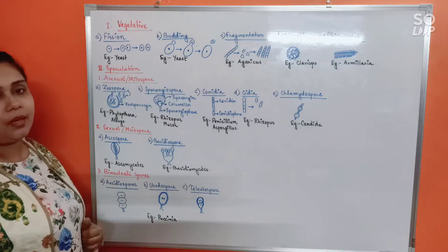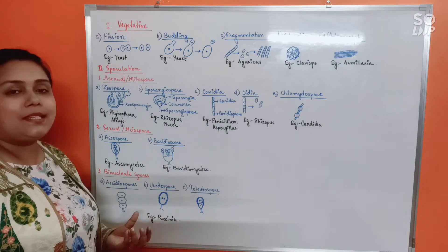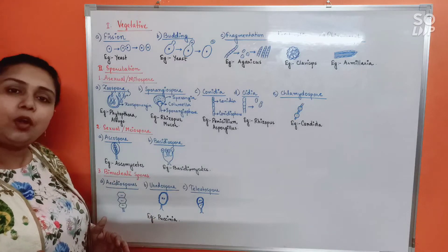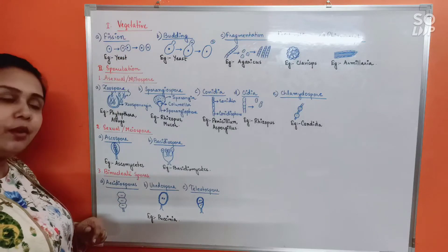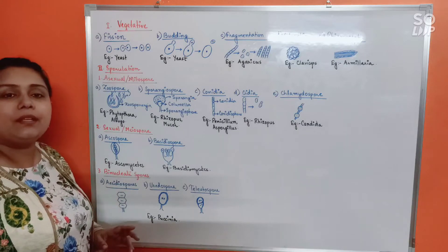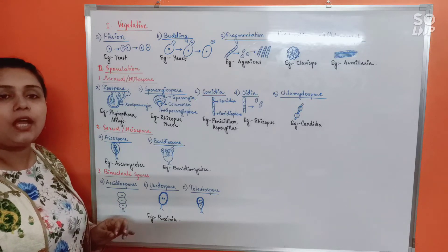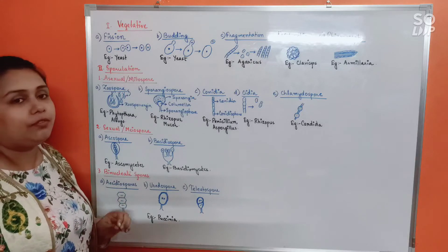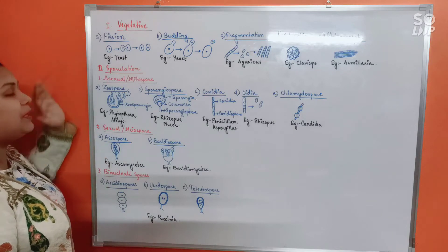First is fission — binary fission, which all of you know very well. In binary fission, the parental cell will, under favorable conditions, divide into two daughter cells. A very important point is that fission will only take place in unicellular fungi. Fission would not take place in multicellular fungi which bear hyphae. It will only be present in unicellular fungi, and the commonly known unicellular fungus is yeast. So the example is yeast.